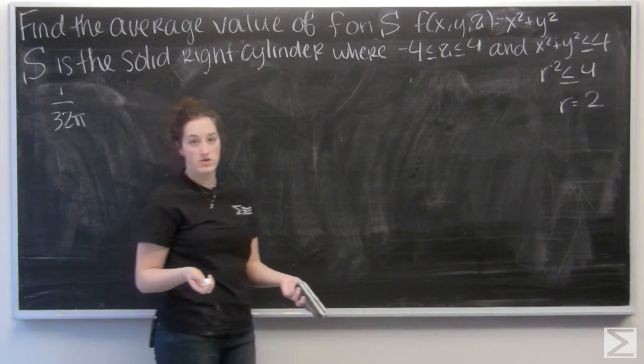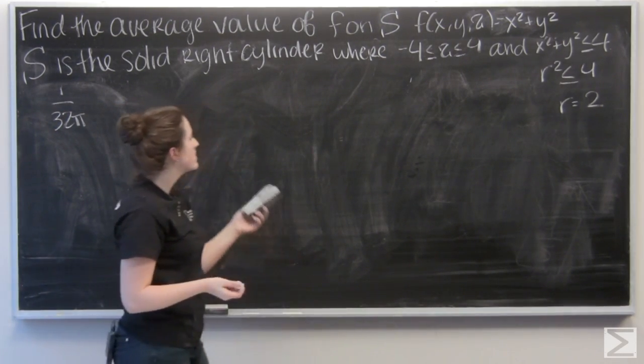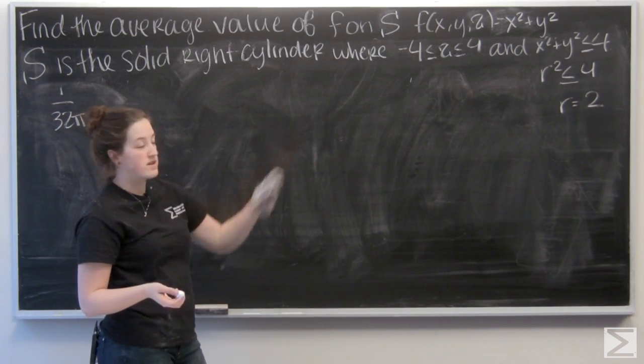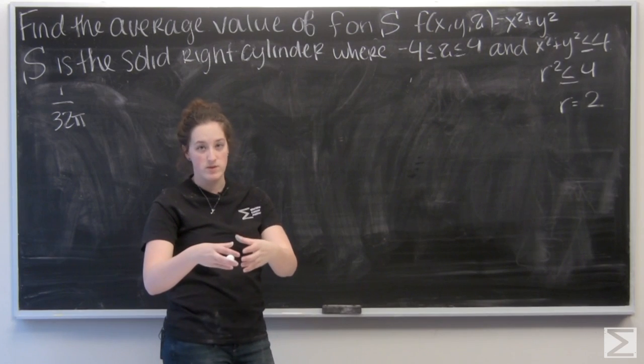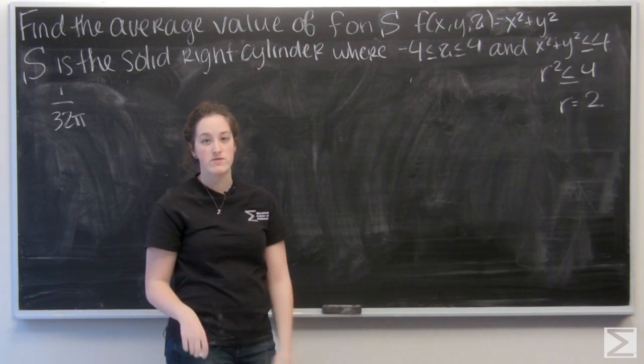So now I just need to set up my integral. I know my r and I know z. I just need to find theta. Well, since this is a cylinder that goes all the way around, I know theta is going to be from 0 to 2 pi.